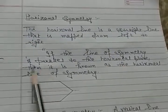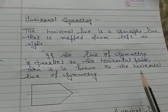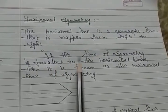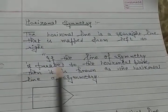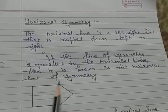If the line of symmetry is parallel to the horizontal line, then it is known as the horizontal line of symmetry.